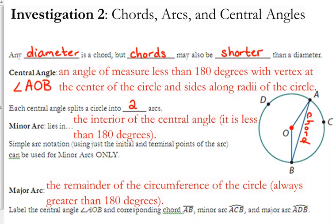So in this case, the minor arc is arc ACB. And we put an arc over those letters to notate that it is an arc.